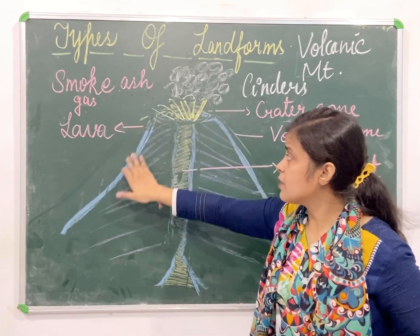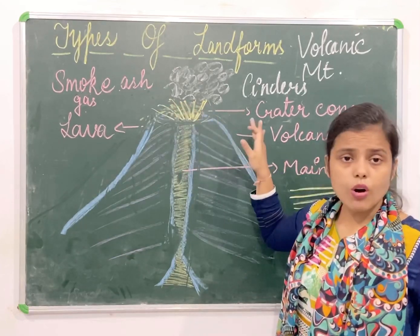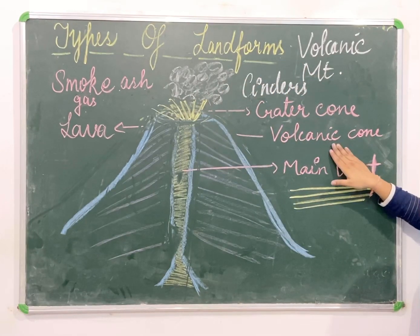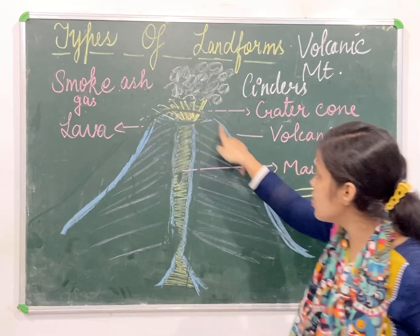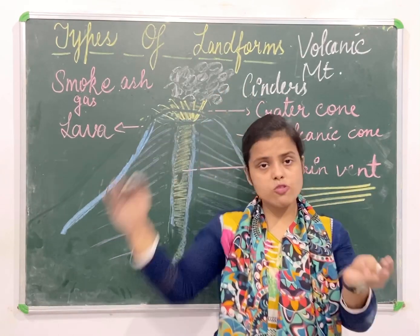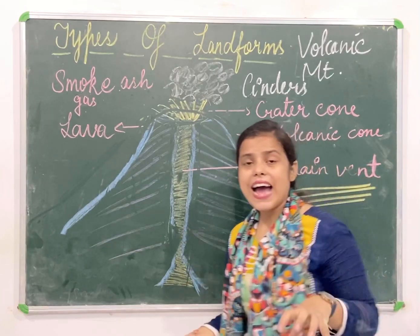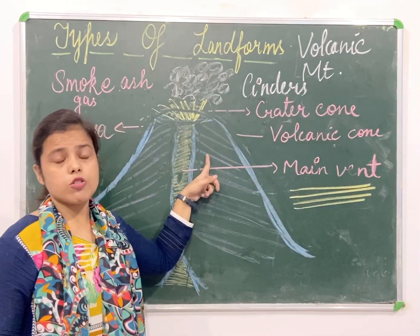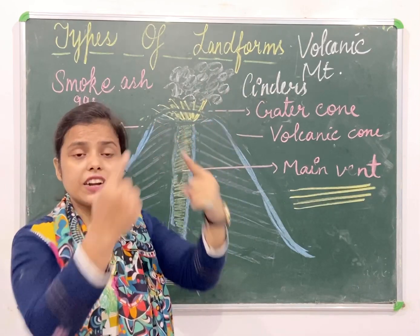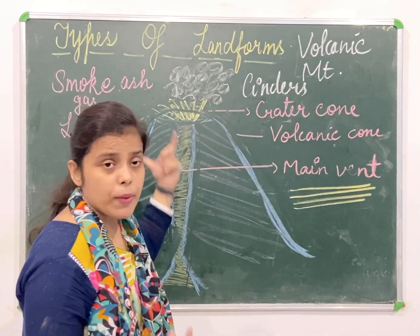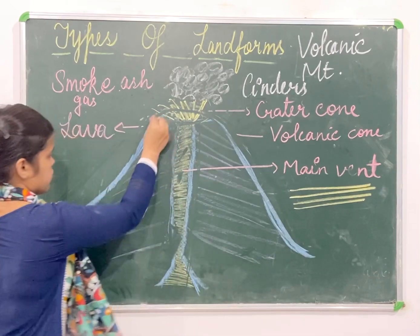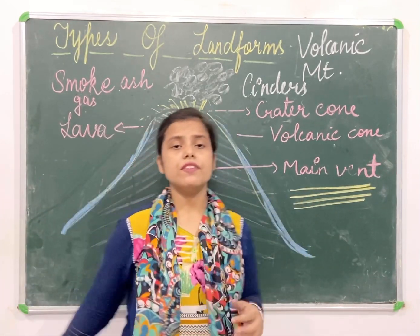This lava, after successive layers of eruption, becomes very hard, which results in the formation of a volcanic mountain. It is in a dome-shaped structure — a round shape with a gentle slope. If the lava is acidic, then the cones will be very high with steep slopes. But when it is a basic lava eruption, the cones are low in height and have a gentle slope, as you can see.